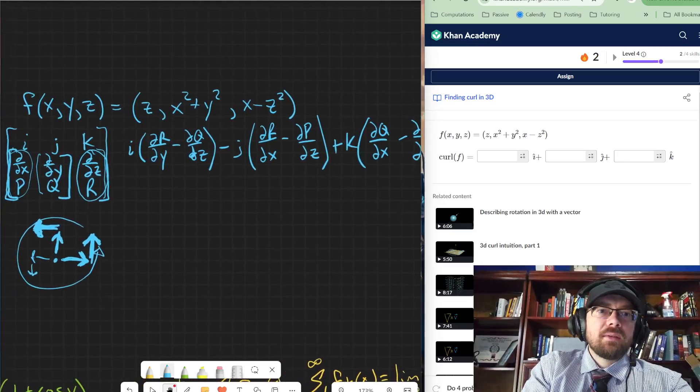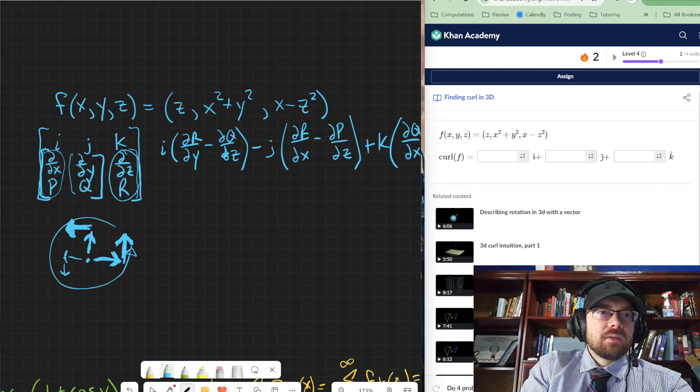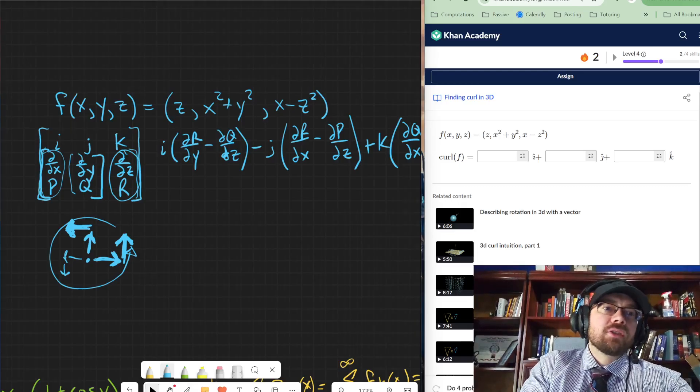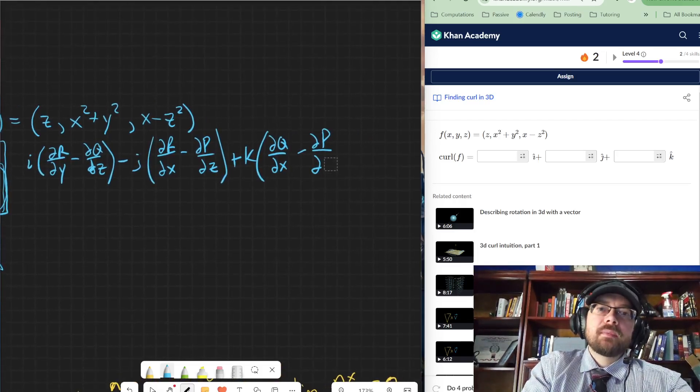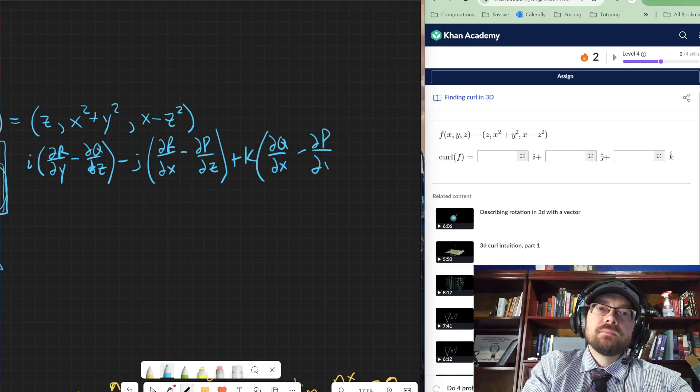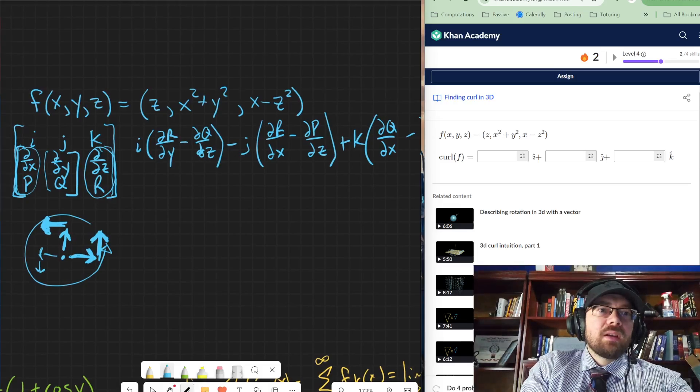Hold on, I should not have that twice, should I? P with respect to z. Oh, sorry. Partial derivative of p with respect to y. I apologize. I thought that looked off. There we go. Partial derivative of p with respect to y.